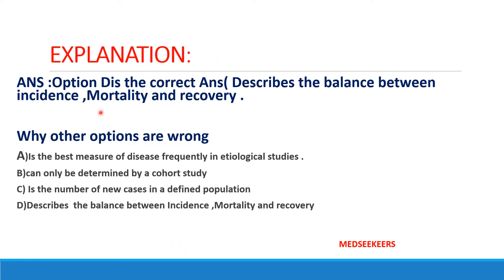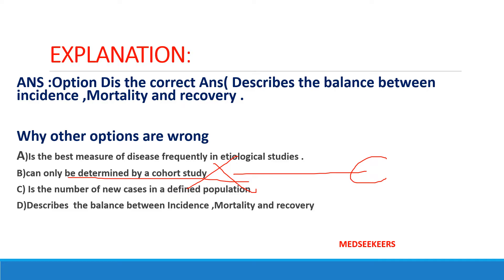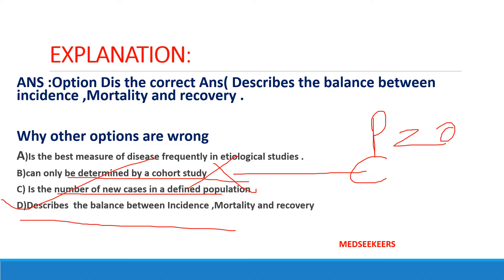The correct answer is option D — prevalence describes the balance between incidence, mortality, and recovery. Prevalence cannot be determined by cohort study; it can be determined by cross-sectional study. Prevalence is not the number of new cases — prevalence is old plus new cases. Incidence is the number of new cases in a defined population. So your correct answer is option D.